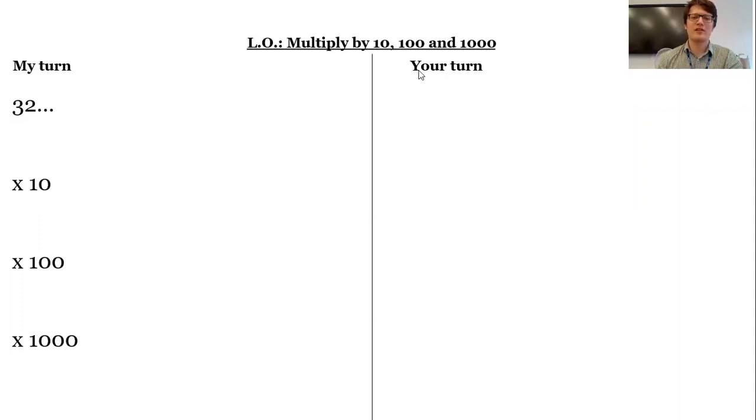Now remember, if I'm timesing 32 by 10, for instance, we don't want to see things like this. 32 times 10 like that. Yes, we could do it like that, but actually that often leads to mistakes.